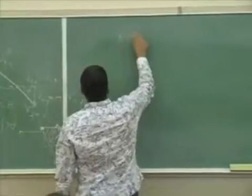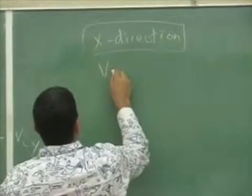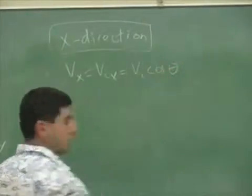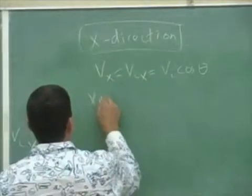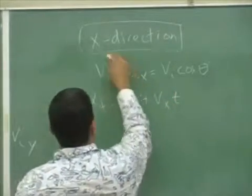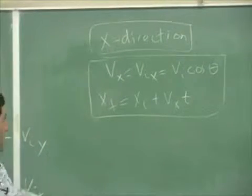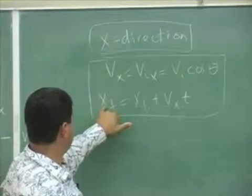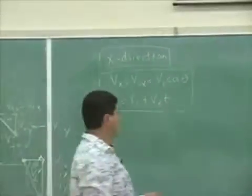In the x-direction: v_x equals v_initial_x, which equals v_initial·cos(θ). Then x_final equals x_initial plus v_x·t. Those are the only equations in the x-direction. The x-component always equals its initial value, and there is no acceleration in the x-direction.